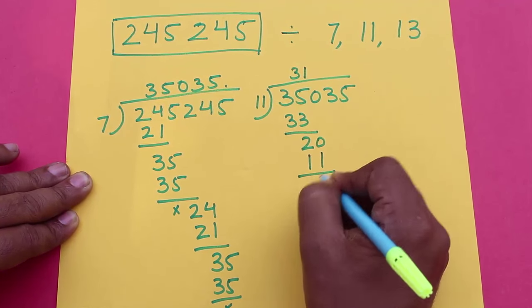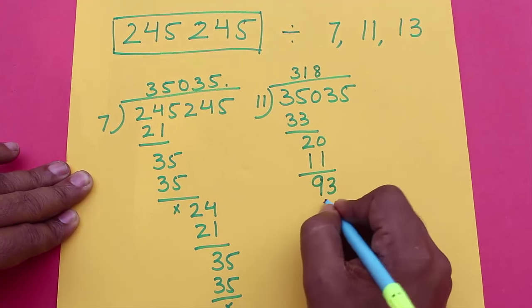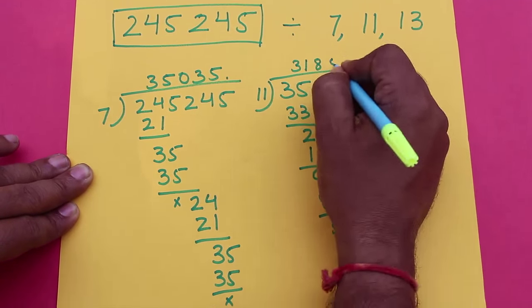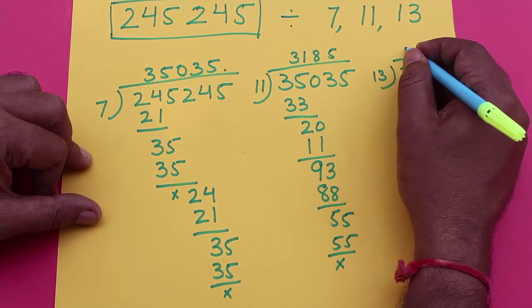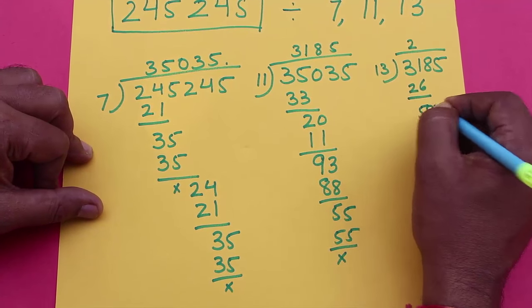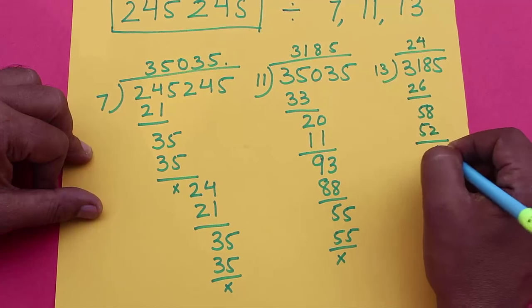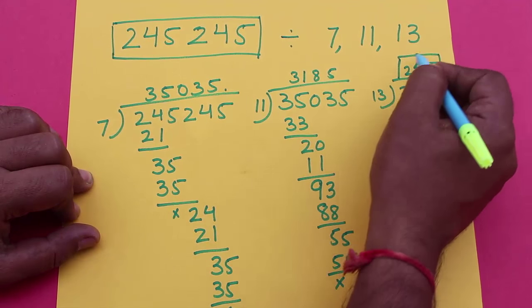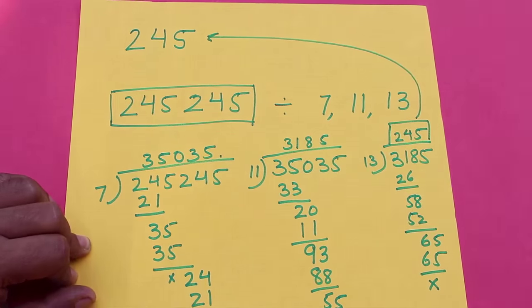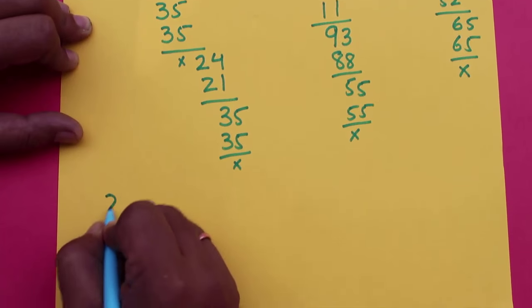On doing this, we get a remainder of 3185. Finally, we will divide 3185 by 13, and we will get 245, exactly the same number from which we started. Now why does this happen?